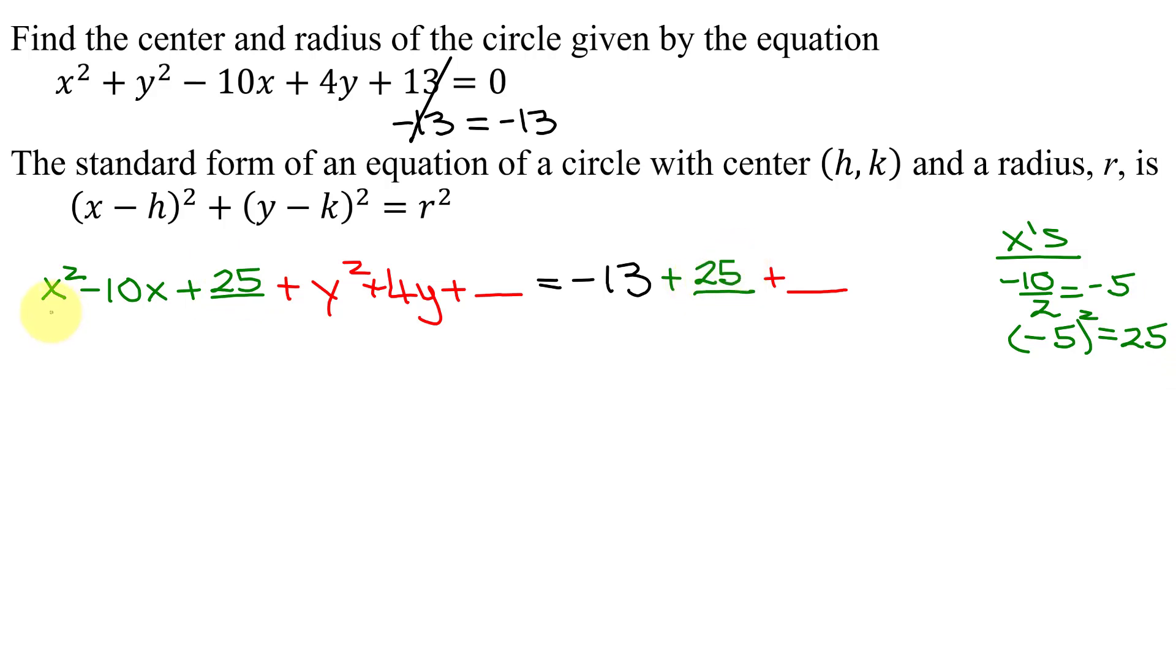When you do that, this expression becomes a perfect square trinomial that factors into x with something all squared. What's that something? It's half of this coefficient. So half of negative 10 is negative 5, giving us (x - 5)². If you're not sure if you got this correct, just multiply this out to see if you get this expression.